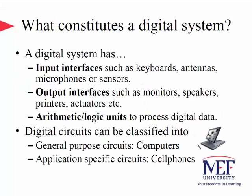What constitutes a digital system? A digital system has input interfaces such as monitors, speakers, printers, and actuators. A digital system also has arithmetic and logic units, and those units process digital data. Digital circuits can be classified into two categories.